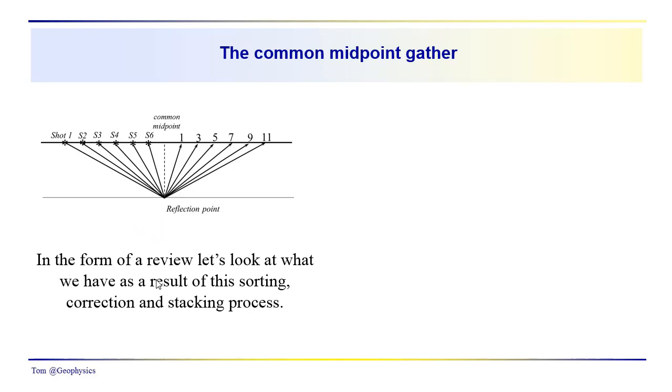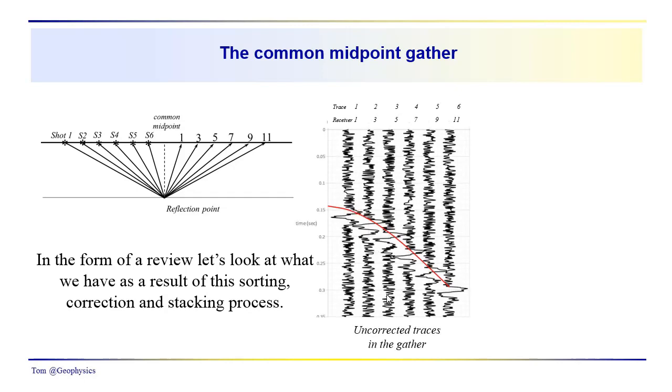But what we want to do now is look at what it is that we get. What effectively are we getting when we go through this sorting, NMO correction, and stacking process? What kind of a trace are we working with? What is its geometrical relationship to the subsurface?